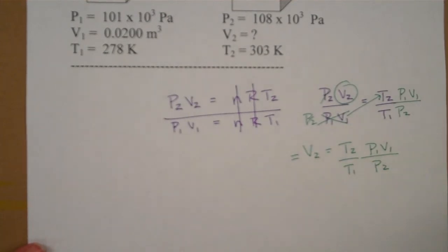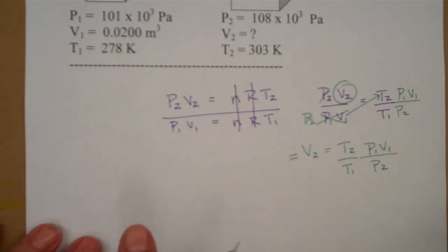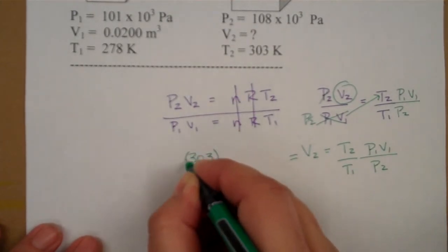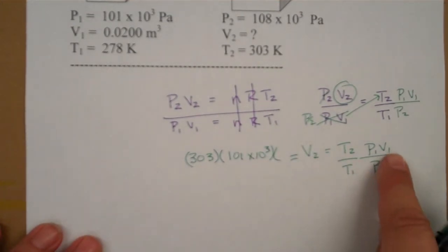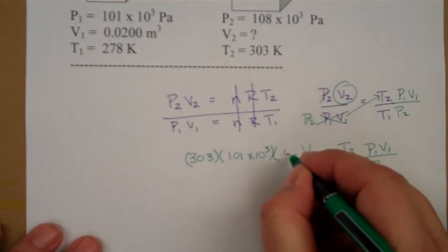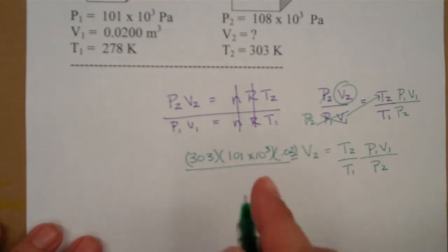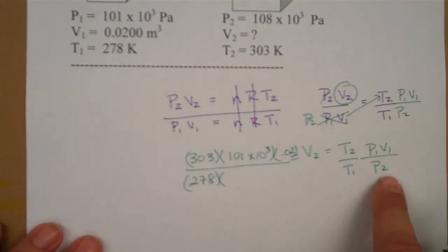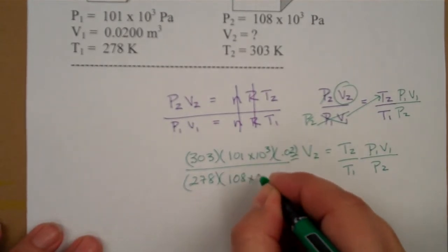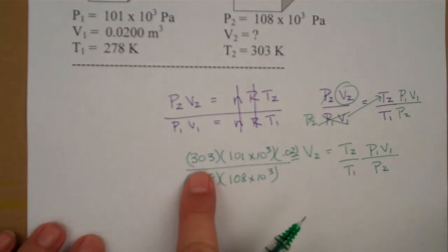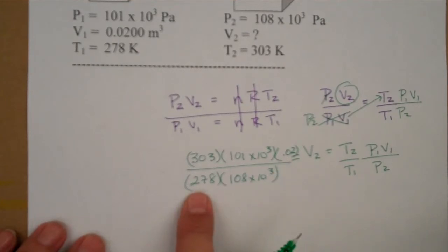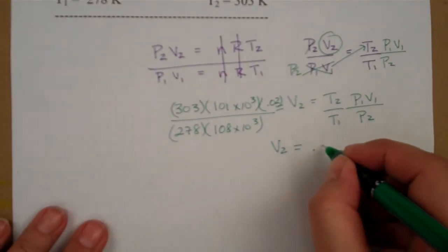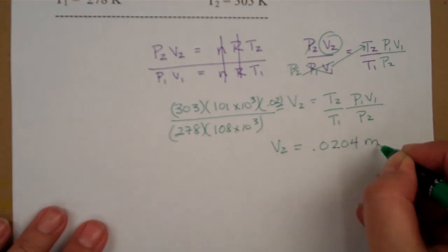And now we can put in our values. Temperature 2 is 303. Pressure 1, 101 times 10 to the third. Volume 1, 0.02. Divide by temperature 1, 278, and pressure 2, 108 times 10 to the third. So 303 times 101 times 10 to the third times 0.0200, divide by 278, 108 times 10 to the third. It looks like V2 will be 0.0204 cubic meters.